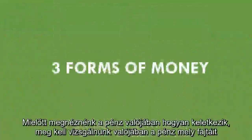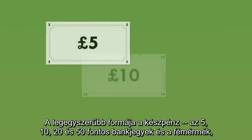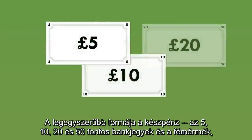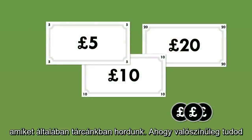Before we start looking at how money is really created, we need to have a quick look at what types of money we actually use in the economy. There are actually three types of money that we use in the economy. As a member of the public, you will only ever have used two of them. The simplest form is cash — the £5, £10, £20 and £50 banknotes and the metal coins that most of us will have in our wallets.